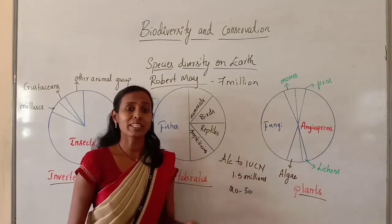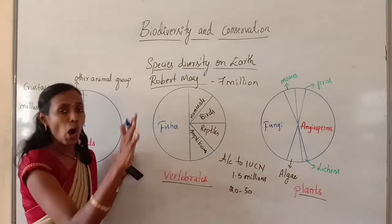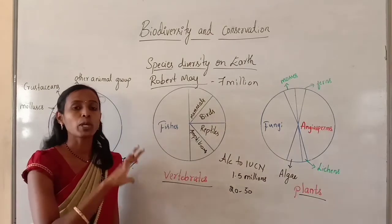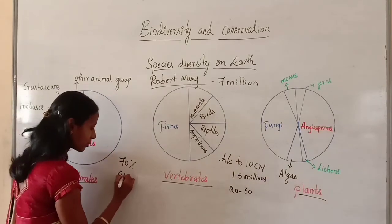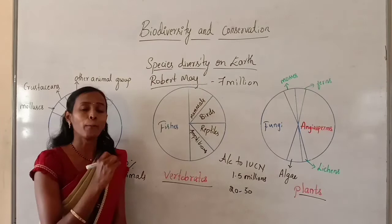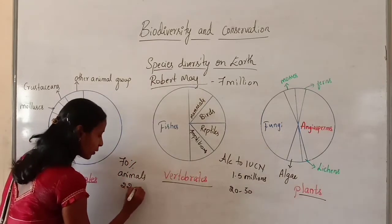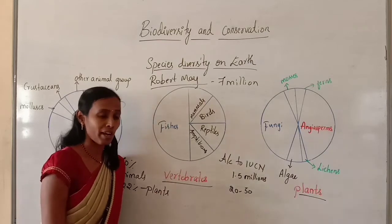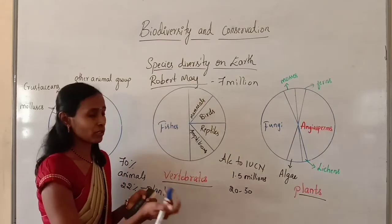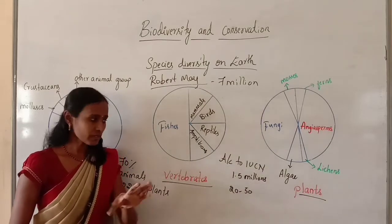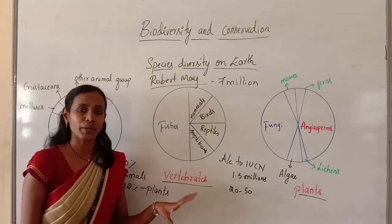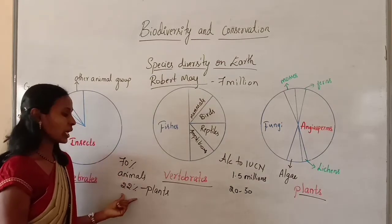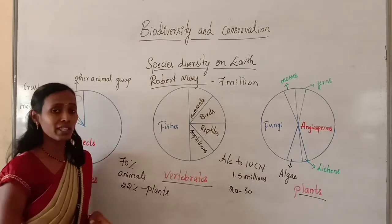Overall, out of all the species recorded so far, more than 70% are animals and only about 22% are plants, including algae, fungi, mosses (bryophytes), angiosperms, and so on.